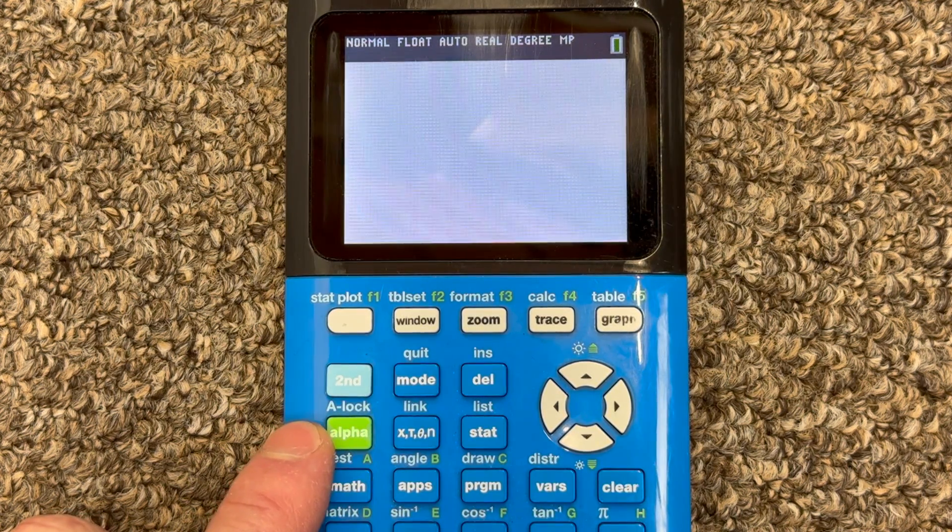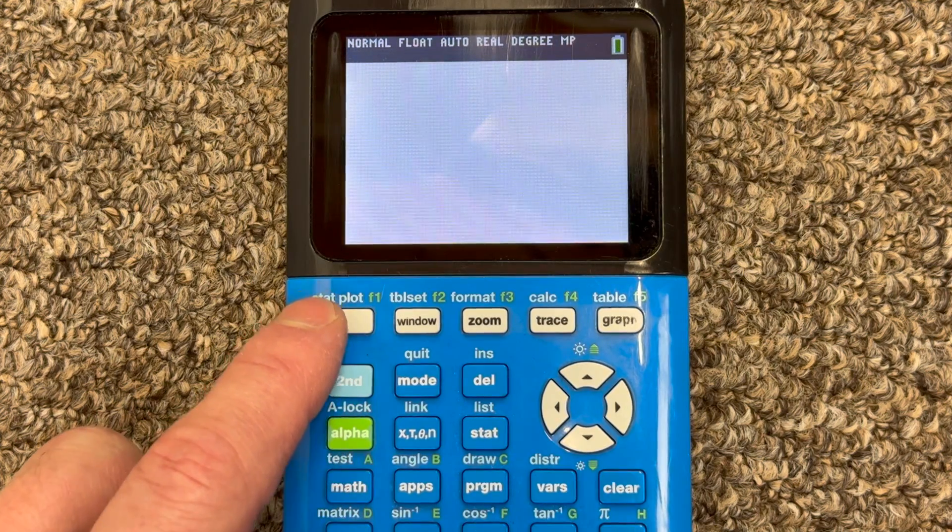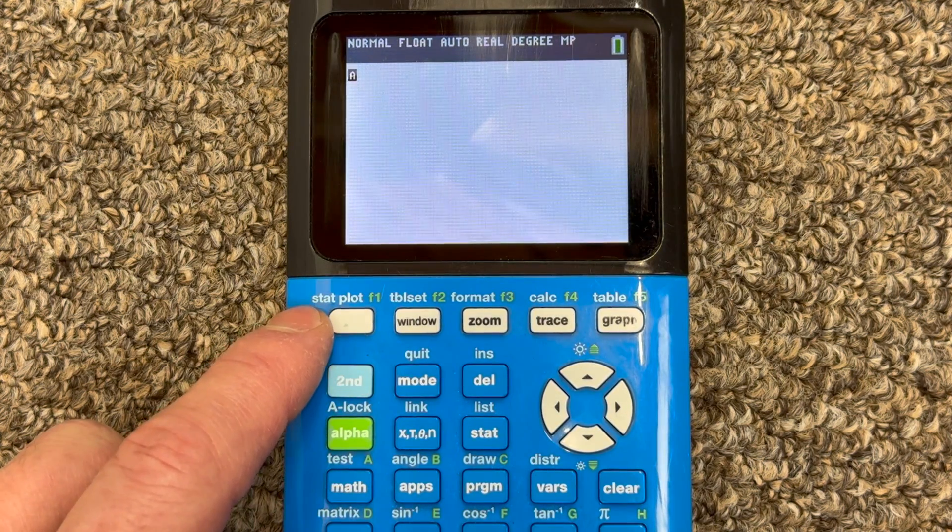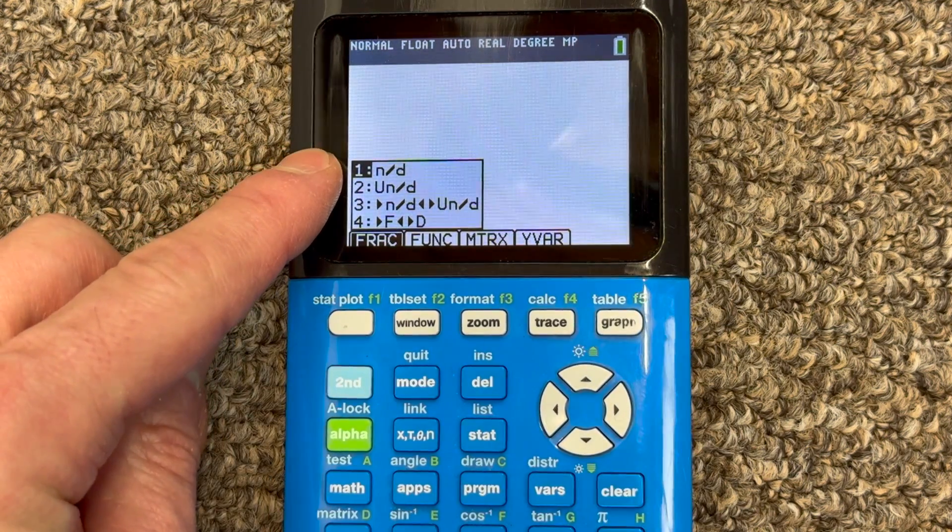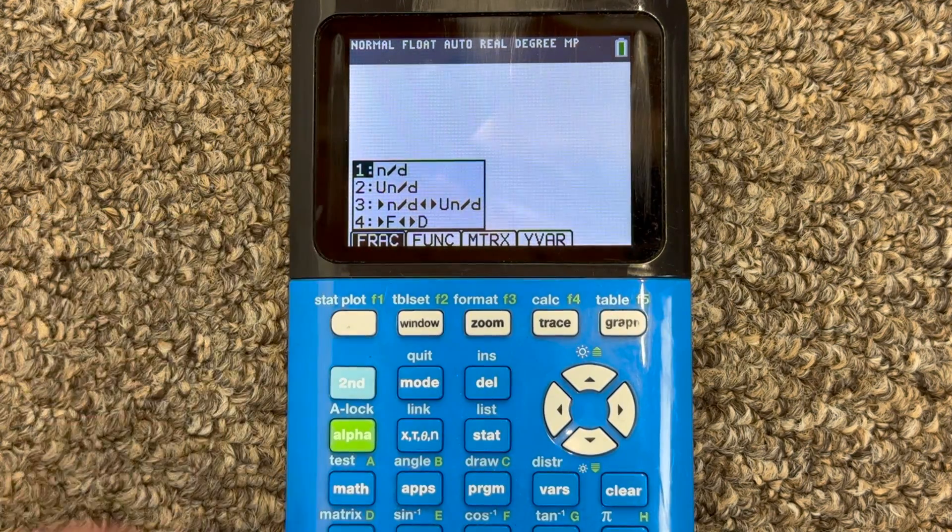You're going to want to go to alpha here, this green key, and then press this Y equals key, which has also gotten worn out here on my calculator. That's in the upper left-hand corner. And then see where it says N over D? That's like numerator over denominator. You're going to want to press enter.